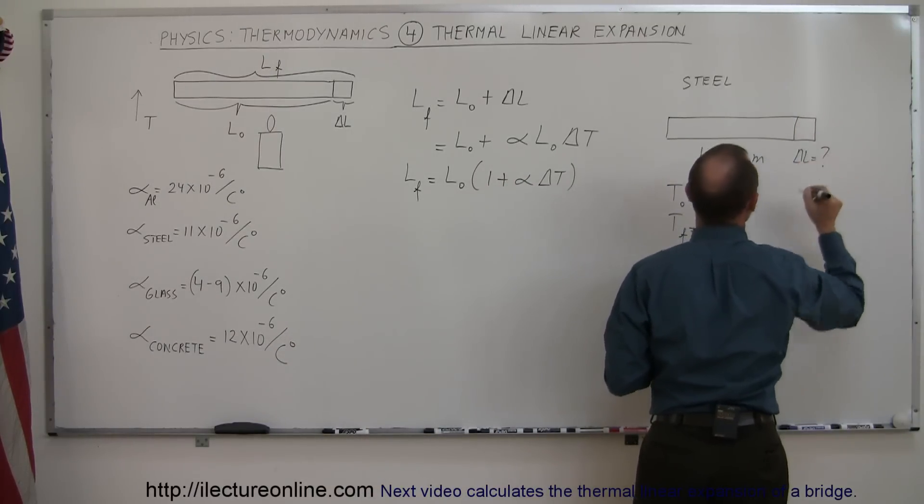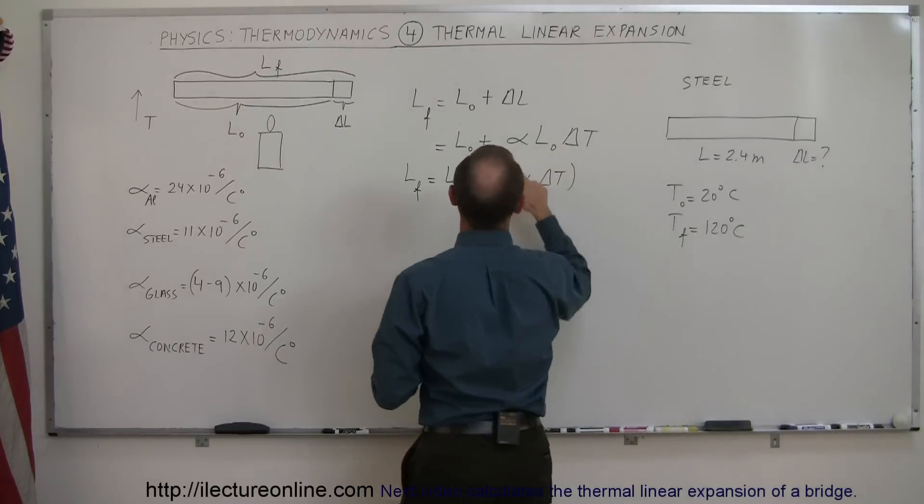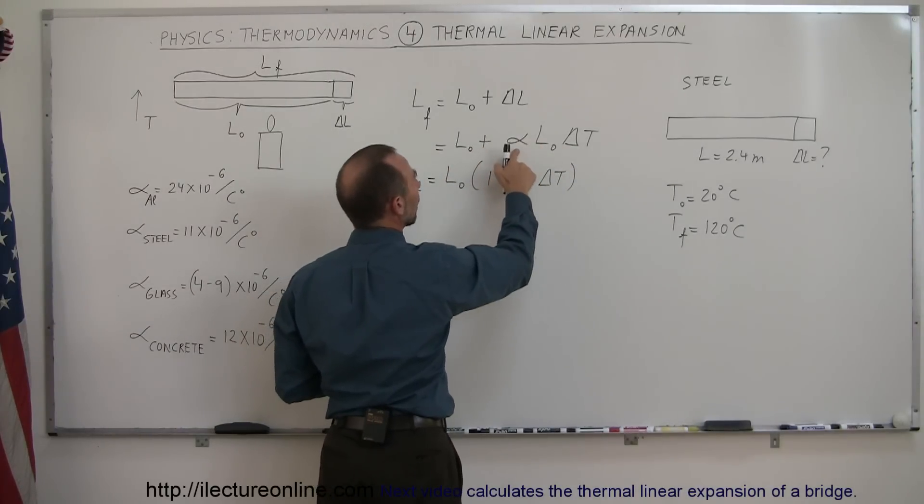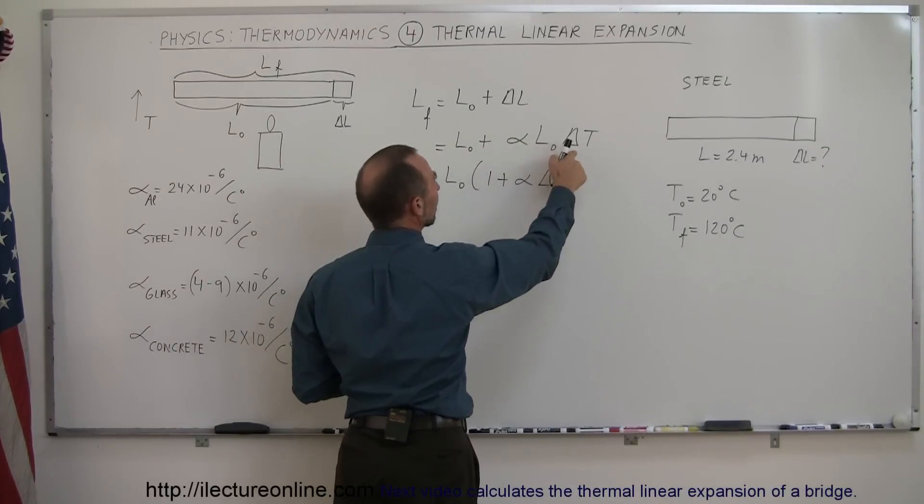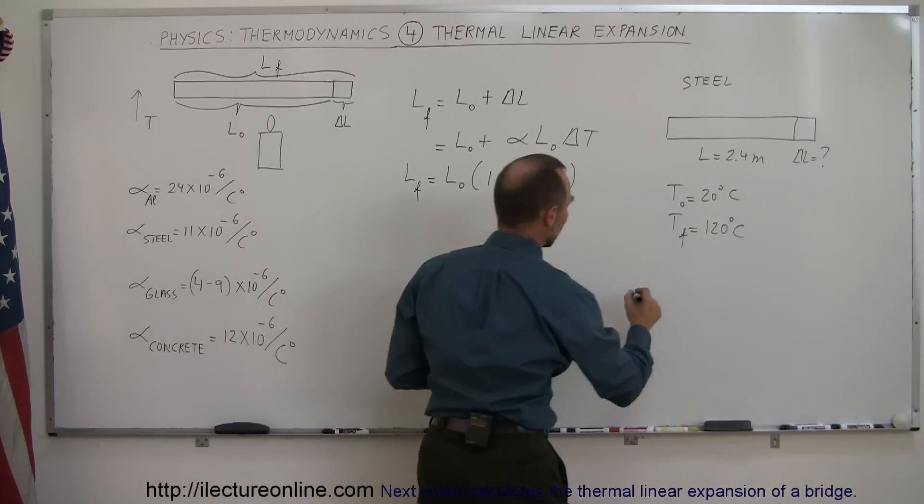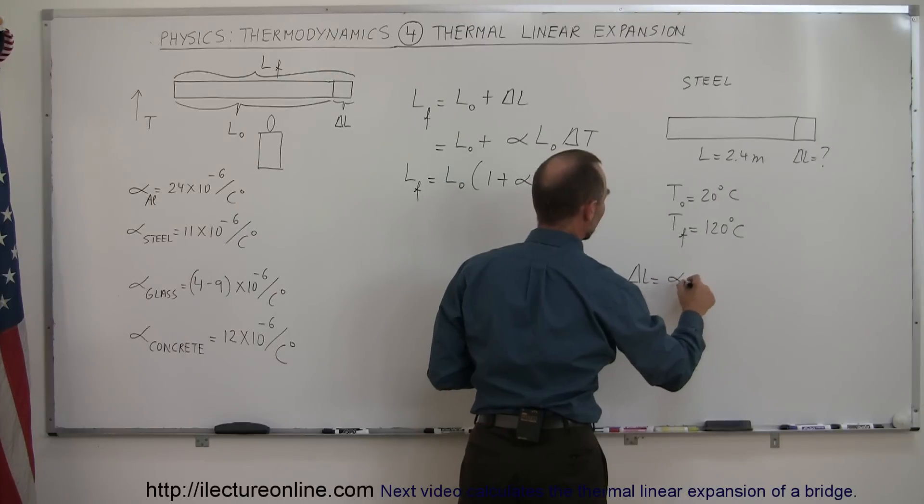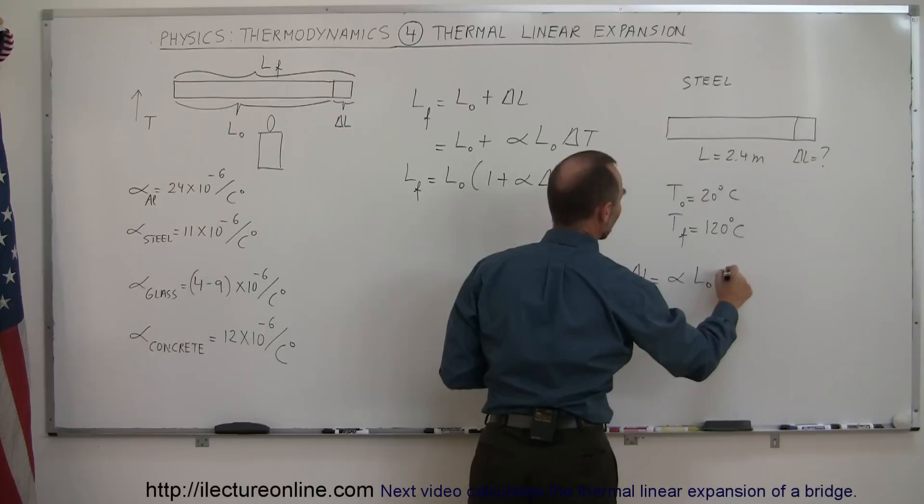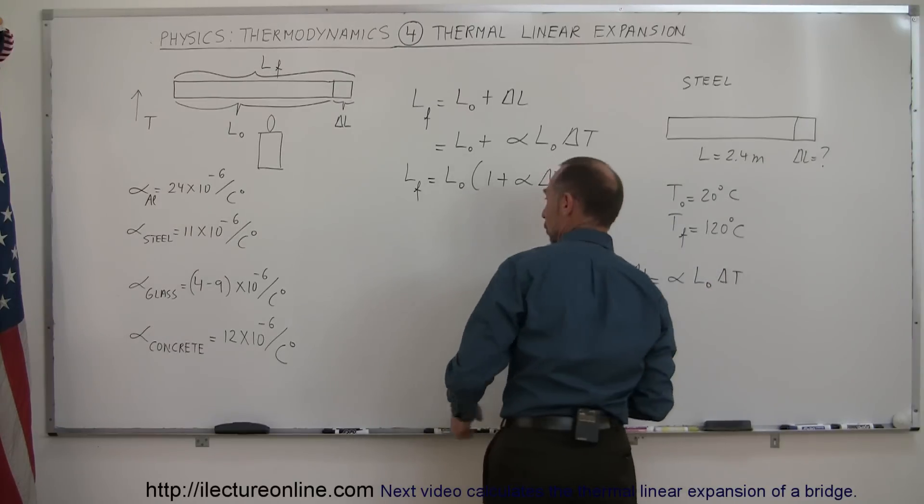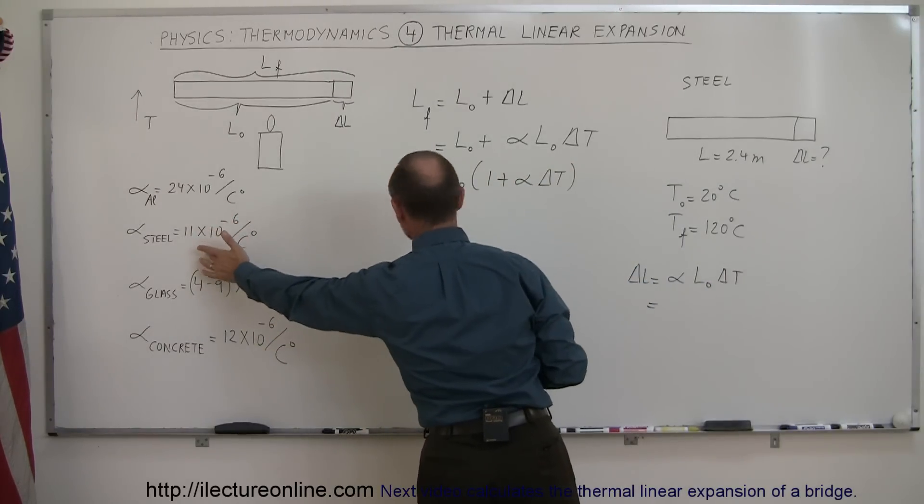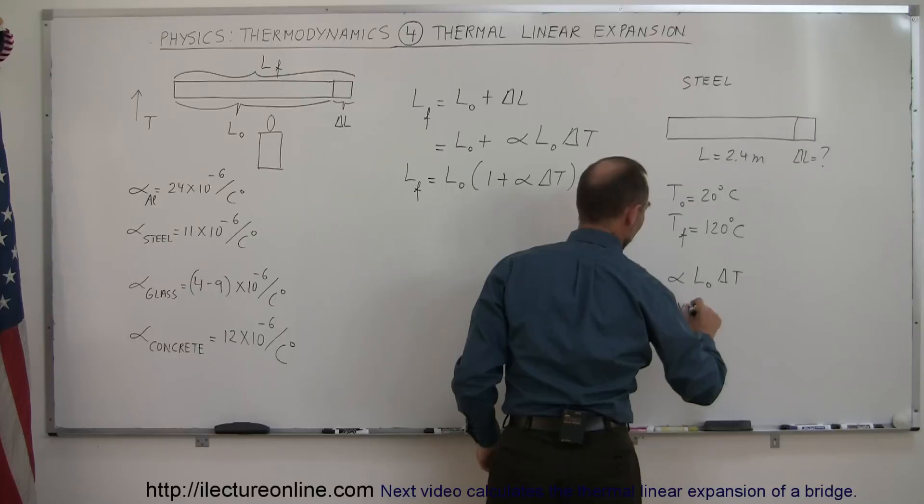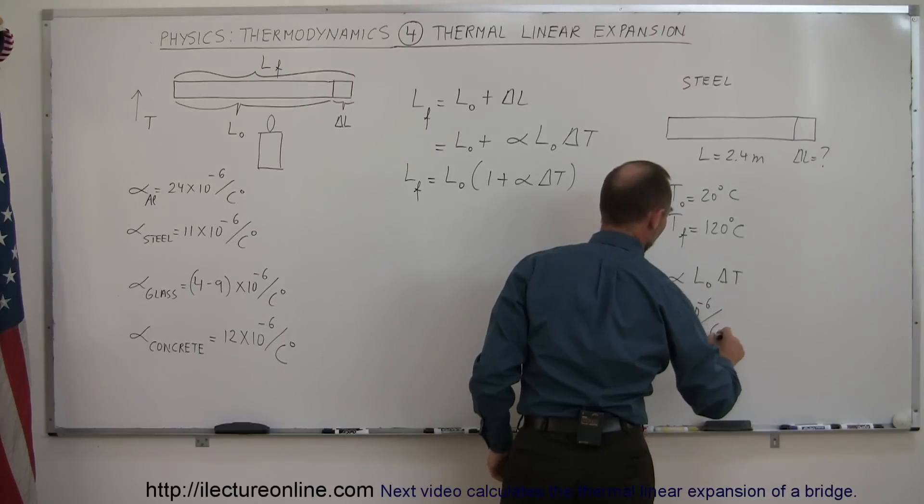Well here we can see that the delta L is simply equal to the coefficient times initial length times the delta T. So the delta length, delta L, is equal to the coefficient times initial length times the change in the temperature. So the coefficient right here for steel is 11 times 10 to the minus 6 per Celsius degree.